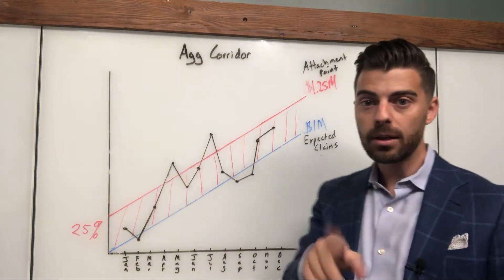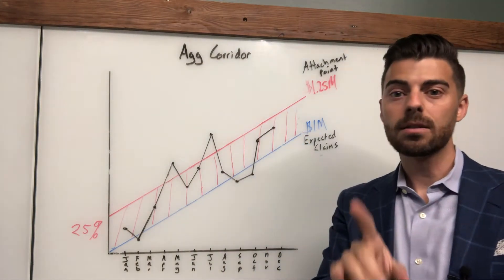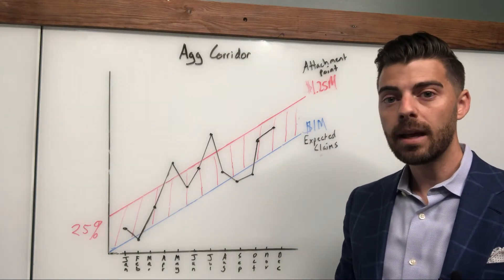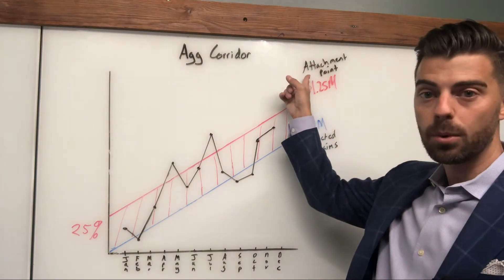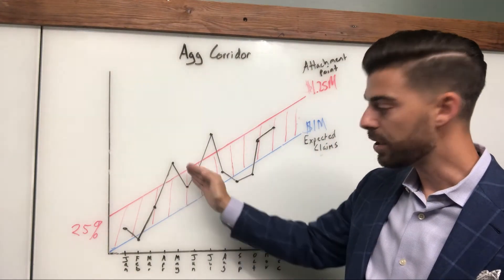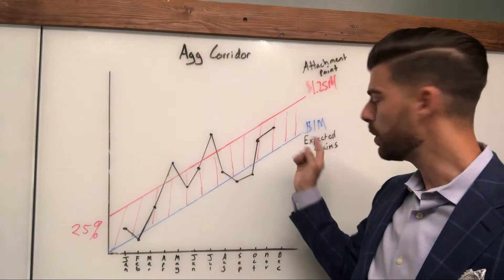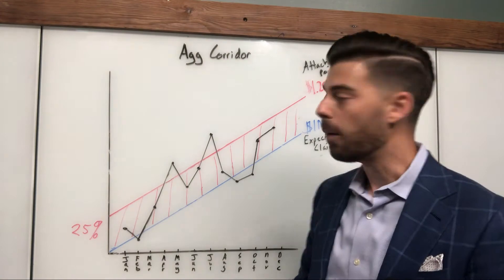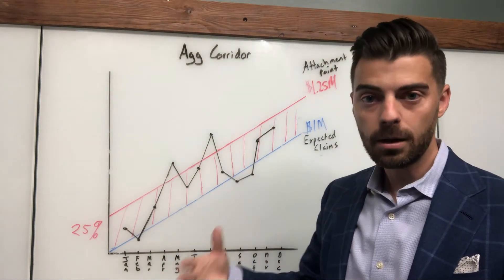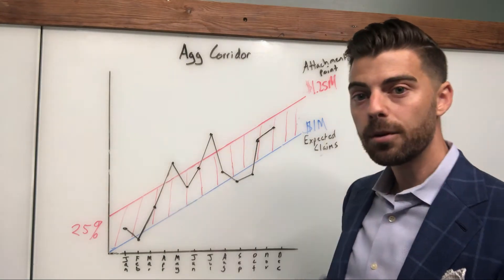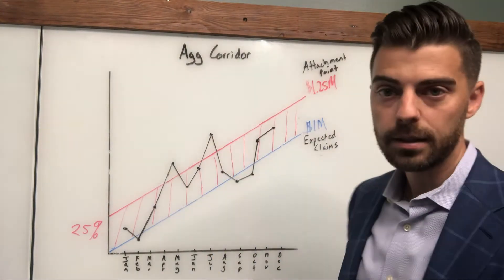In my previous video, which was talking about specific stop loss and aggregate stop loss insurance, I referenced a term called the attachment point. What I have described here is the aggregate corridor, which is the buffer that's added on to expected claims in order to calculate that attachment point. We are talking about the aggregate corridor, which is the buffer put on expected claims to calculate attachment point.